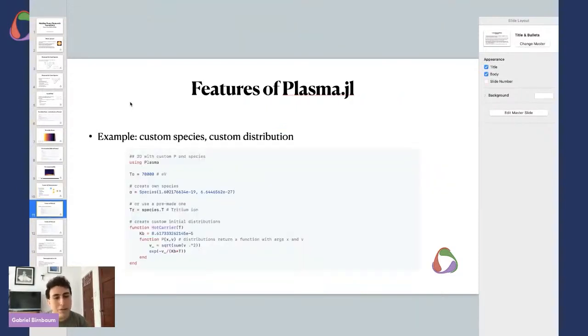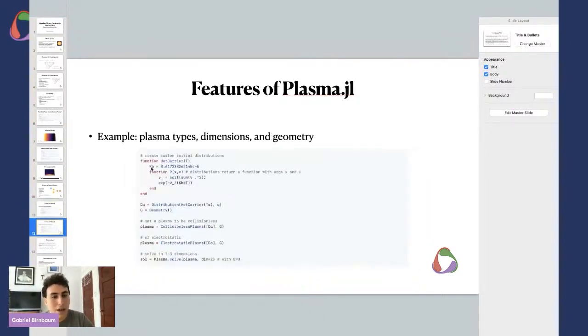You can play around with us a little bit, in the sense that you can create your own species or use a pre-made one, create several types of initial distributions, as you can see here with the hot carrier example, which is a different plasma benchmark. And then you can always set a plasma to be collisionless or electrostatic, and then solve it in one to three dimensions, which is actually three to six dimensions plus time.